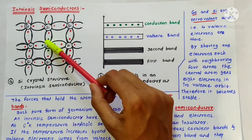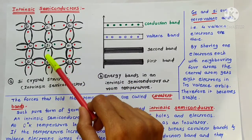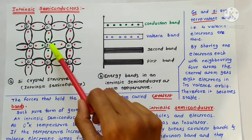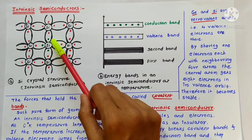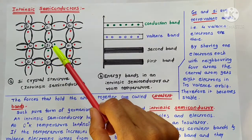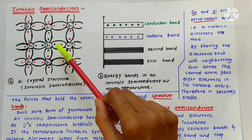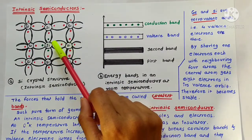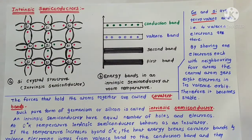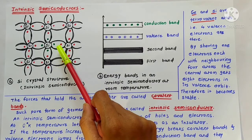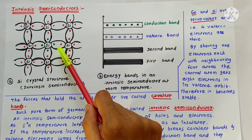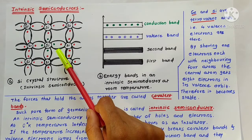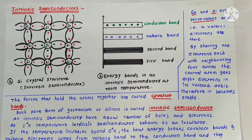You can see here the sharing of electrons with adjacent atoms. This central silicon atom gets 8 valence electrons in the outermost orbit, so the atom becomes stable. The forces that hold the atoms together are called covalent bonds. All valence electrons form covalent bonds, so no electron is free for carrying current. Thus, at absolute 0 degree Kelvin temperature, a semiconductor behaves as an insulator.